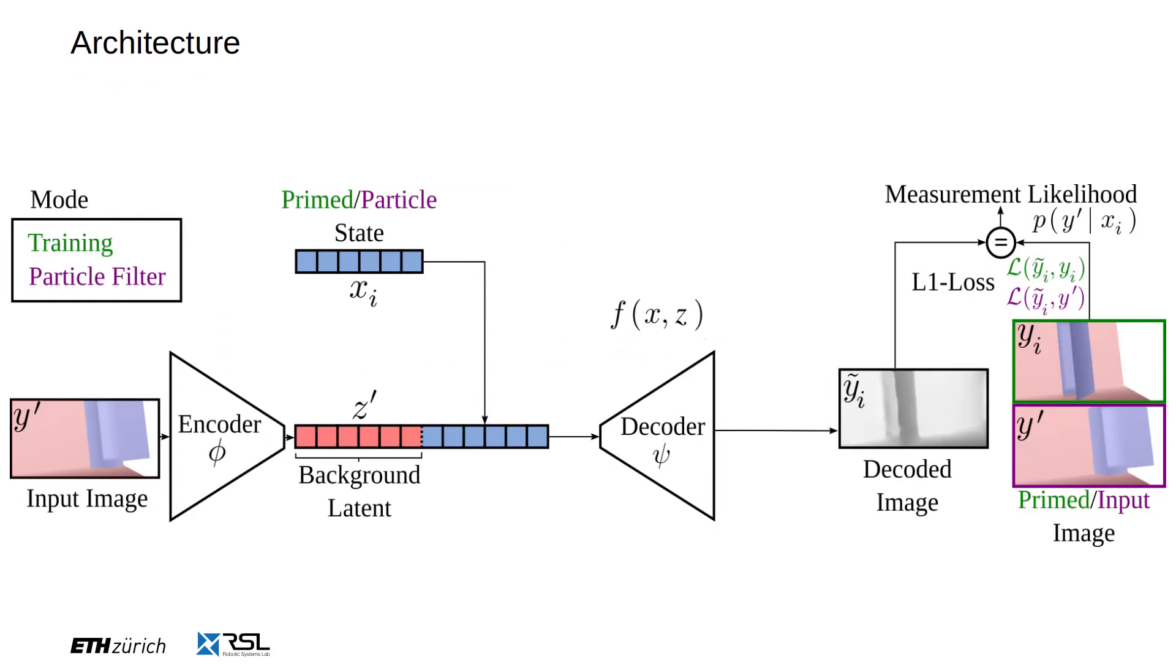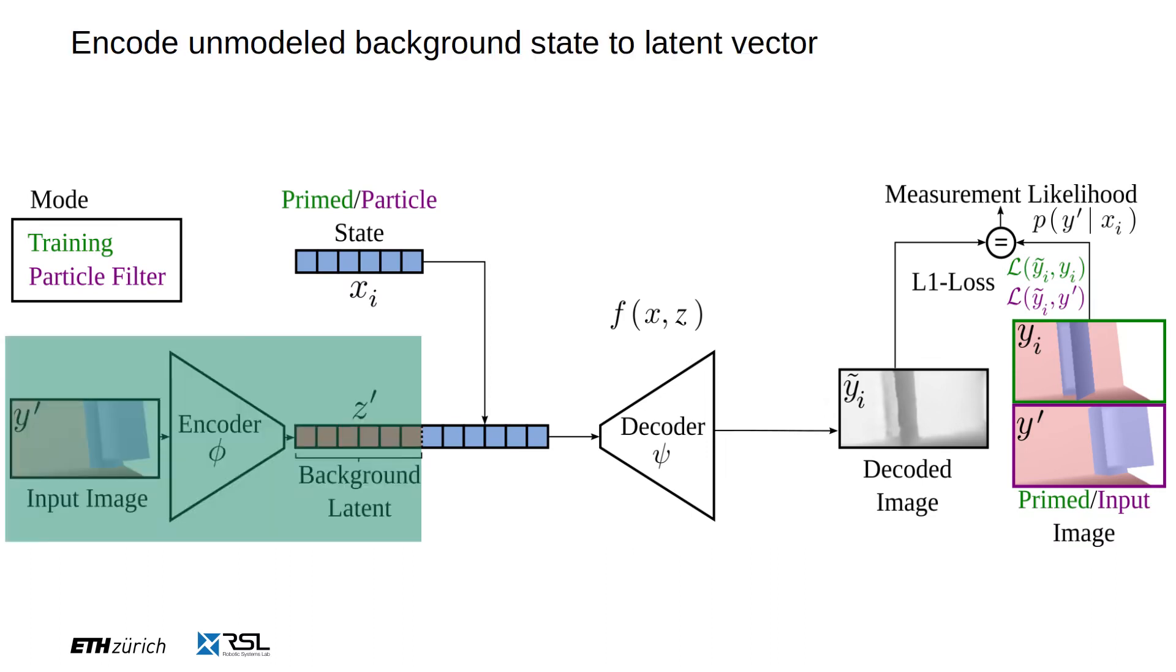Deep measurement update has a conditional encoder-decoder neural network structure to process depth images. The encoder network compresses the input image into a latent vector.